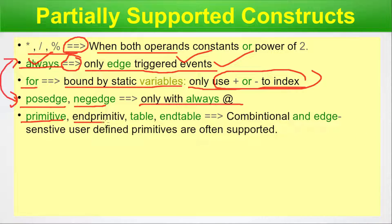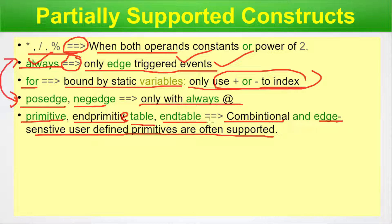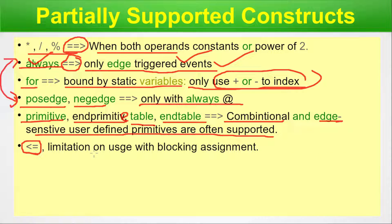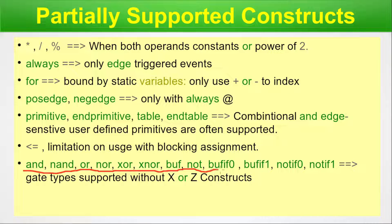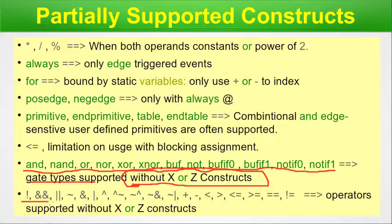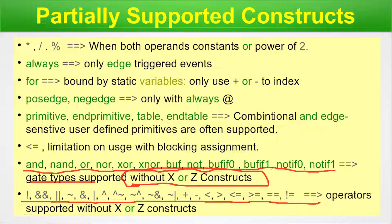Also partially supported: primitive and endprimitive — combinational and edge-sensitive user-defined primitives are often supported. The assignment operator has limitations on usage with blocking assignments. Gate types — and, nand, or, nor, xor, xnor, buf, not, buf0, buf1, not0, not1 — are all supported without x or z constructs, meaning you cannot use x or z in their input/output logic. A large list of operators is also supported without x or z constructs.